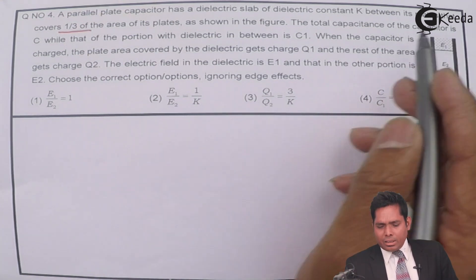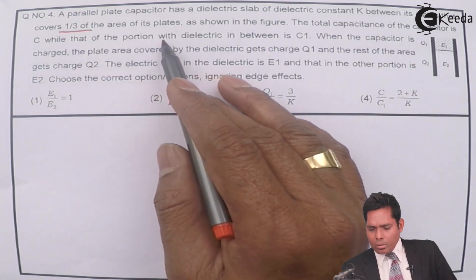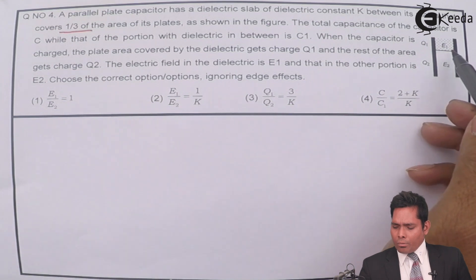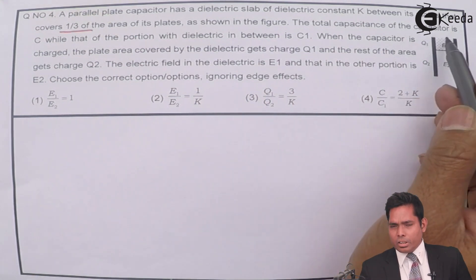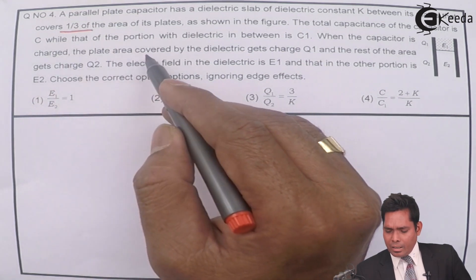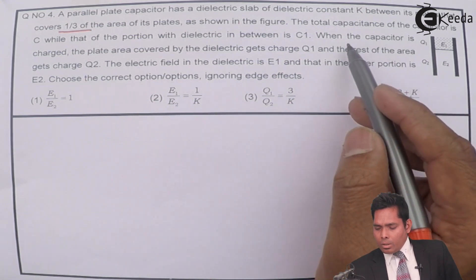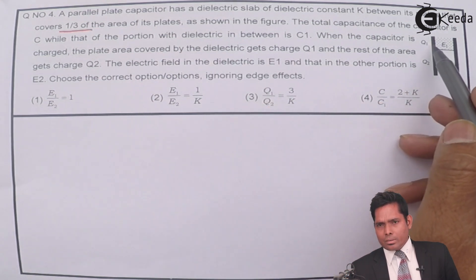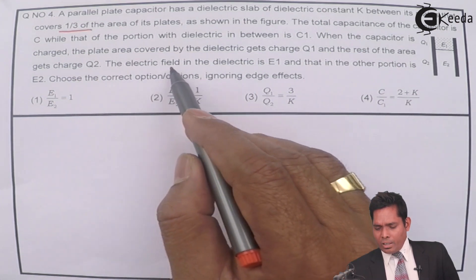The total capacitance of the capacitor is C, while that of the portion with dielectric in between is C1. When the capacitor is charged, the plate area covered by the dielectric gets charge Q1, and the rest of the area gets charge Q2. The electric field in the dielectric region is E1, and in the other region it is E2.